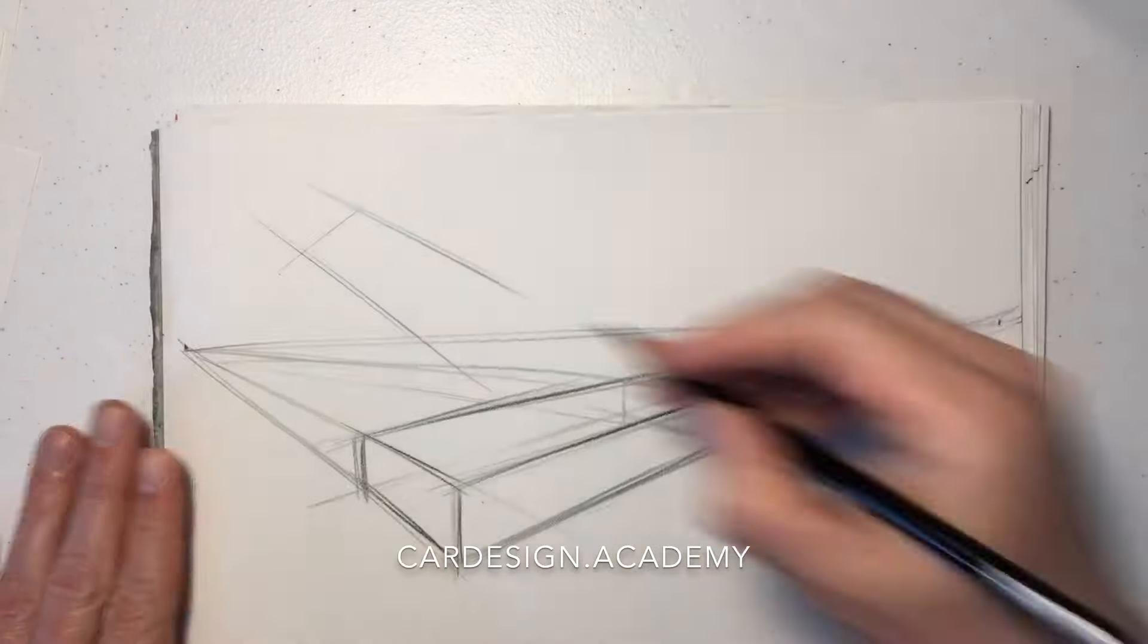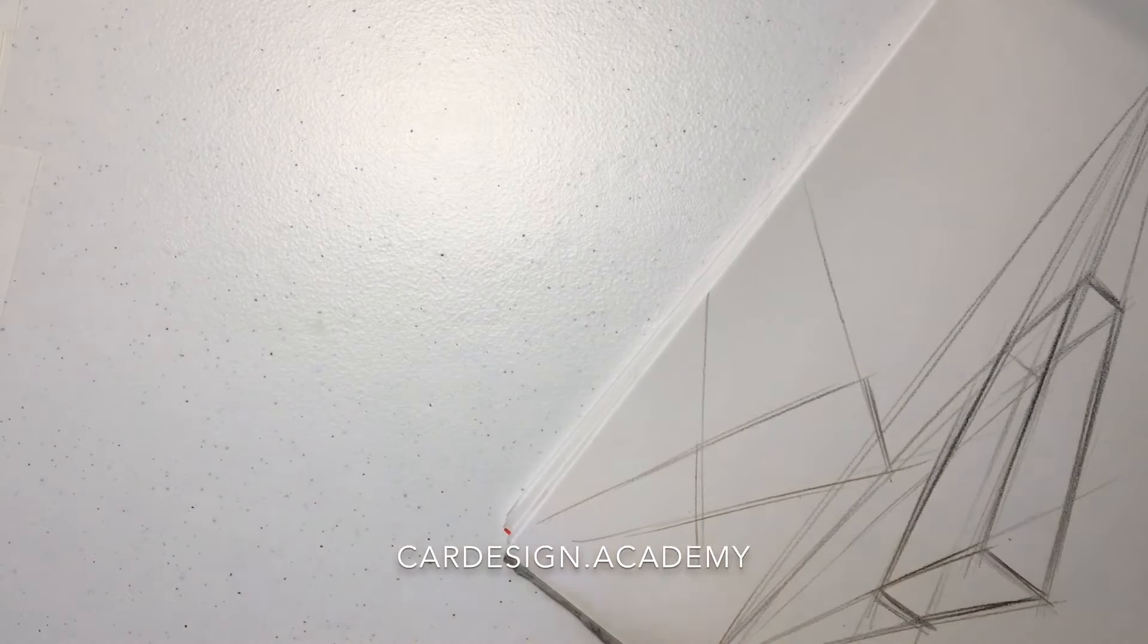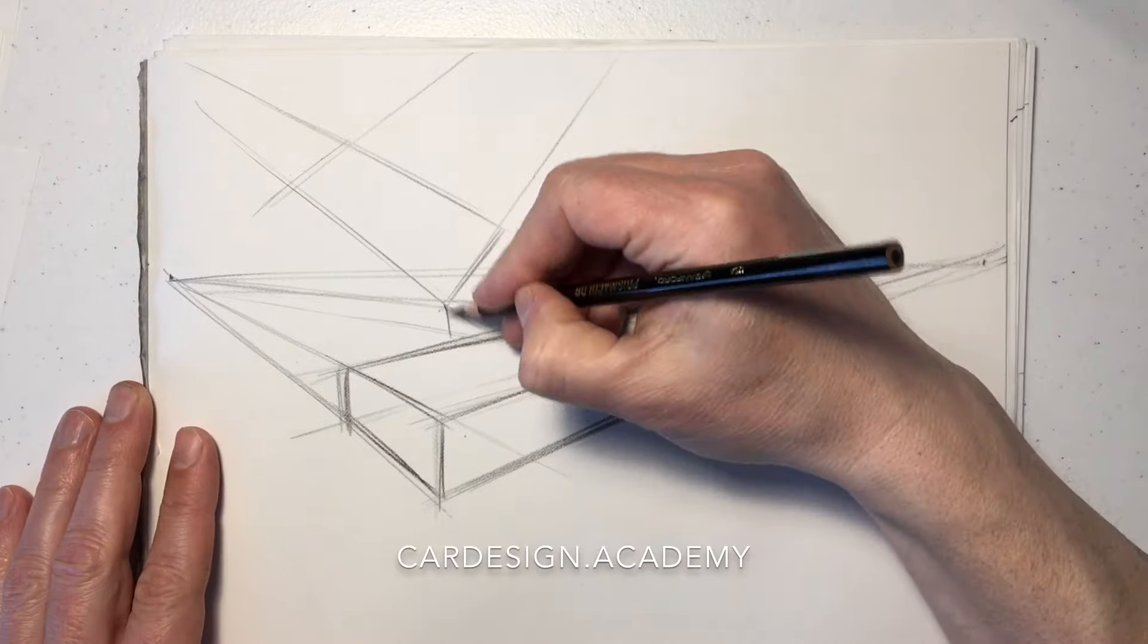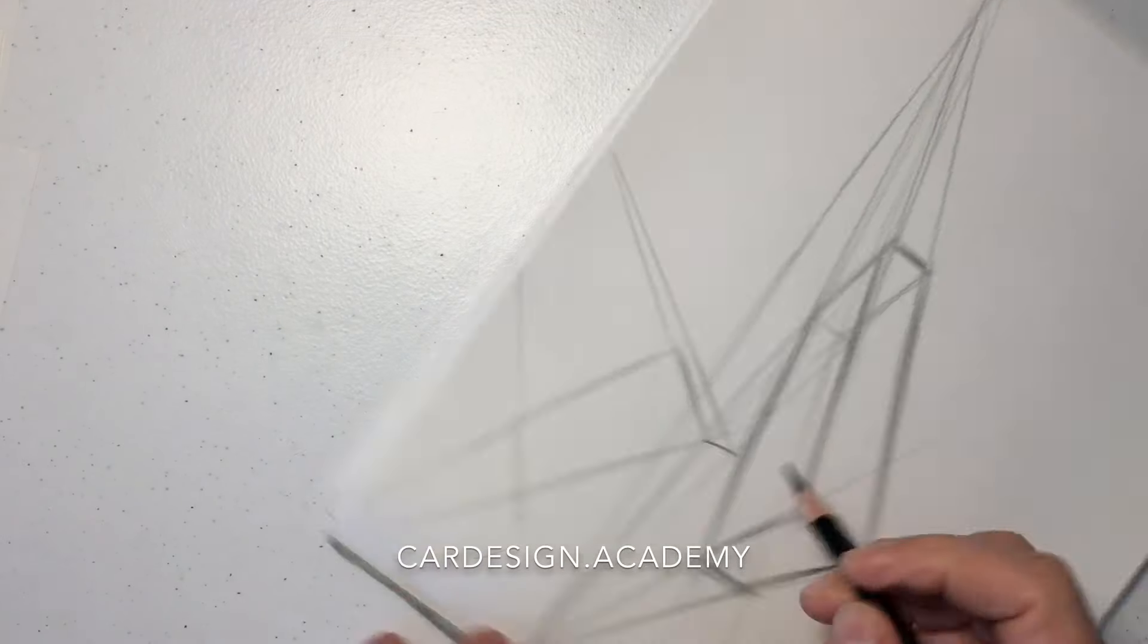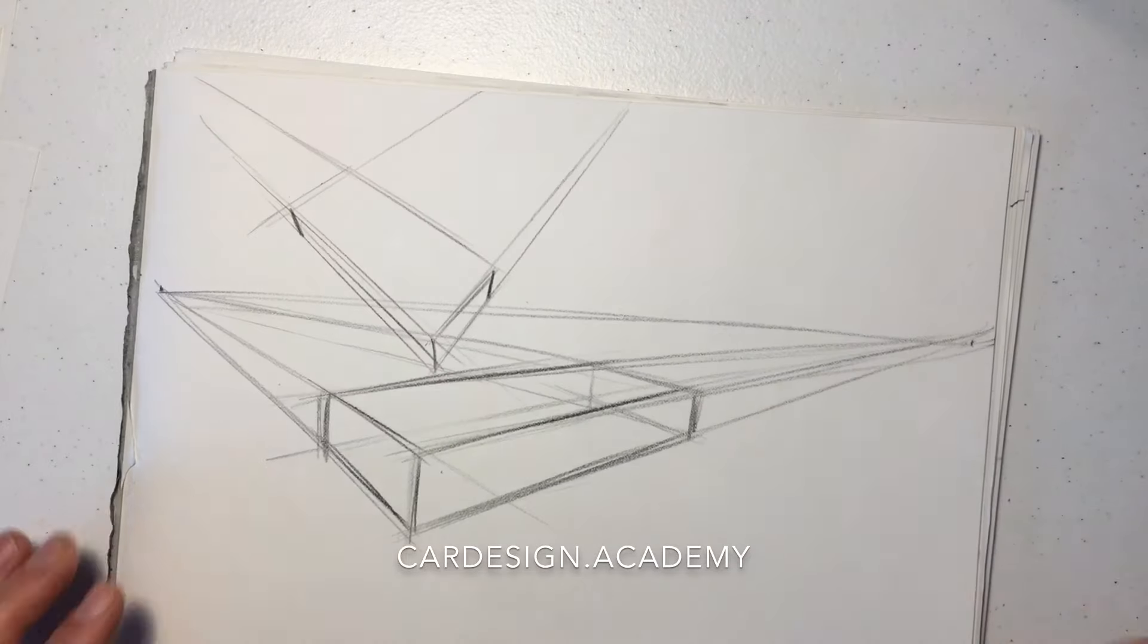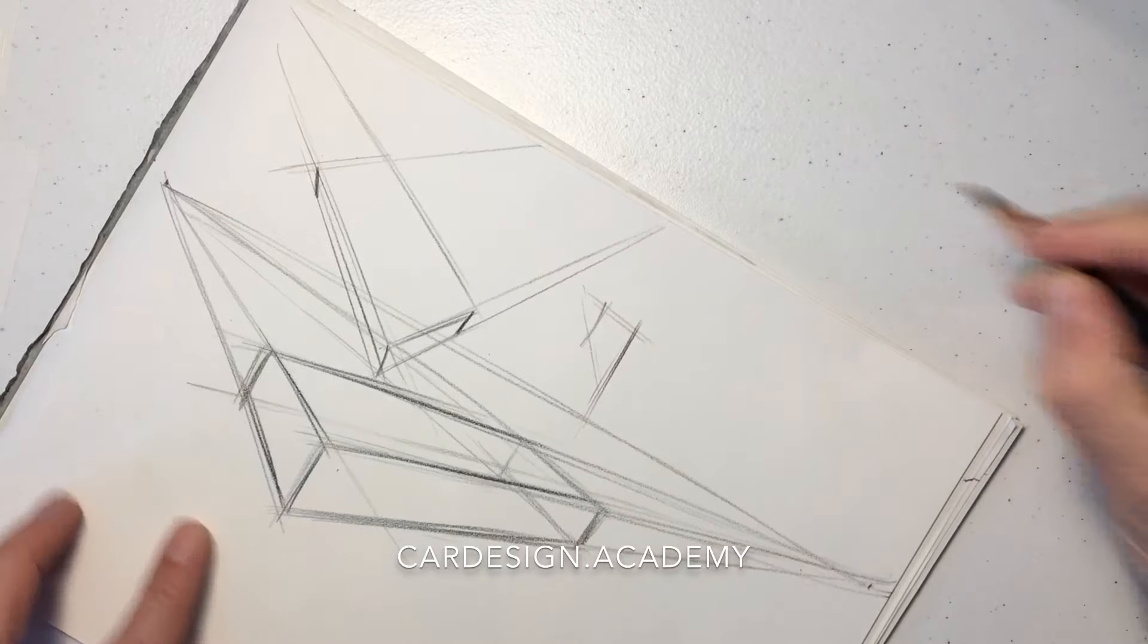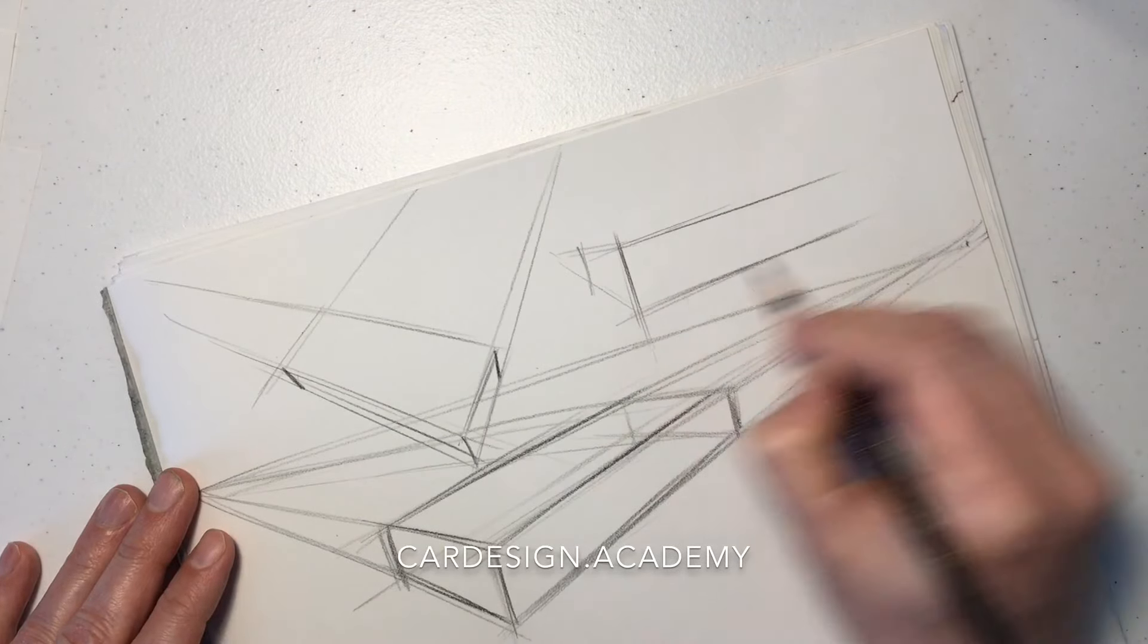Once again, we're going to practice drawing this elongated rectangular shape. You can see the vanishing points may go off the page. It's good to extend those vanishing points as far as you can.